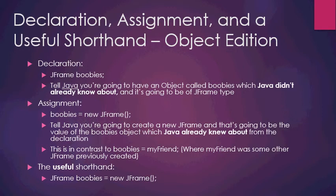For assignment, we can have something like 'boobies = new JFrame()'. What that does is invoke the constructor in the JFrame class, create a new JFrame object, and set boobies equal to it. You're telling Java to create a new JFrame that's going to be the value of boobies. When you set boobies equal to new JFrame, Java already had to know about boobies from the declaration, otherwise it will give you an error.